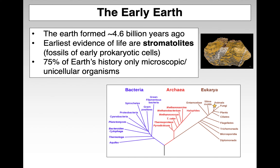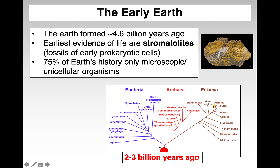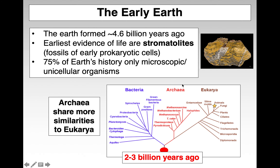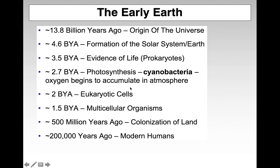Humans are just a blip on the evolutionary scale. We're talking way down here at this root, before we evolved to the three domains: bacteria, archaea, and eukarya. Remember, archaea has a lot of similarities to eukarya, such as histones and introns, despite the fact that they're prokaryotic like bacteria.